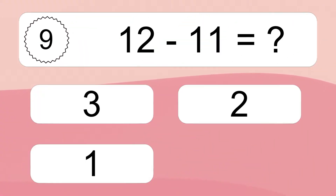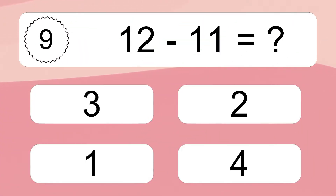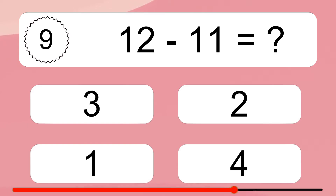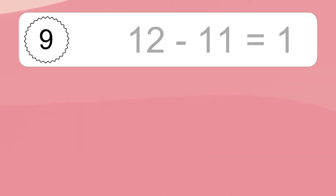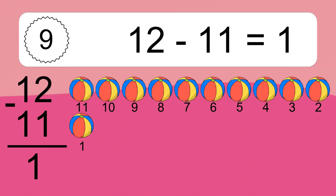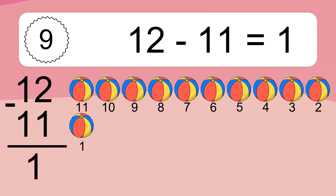12 minus 11 equals what? 12 minus 11 equals 1. Let's count it. 11, 10, 9, 8, 7, 6, 5, 4, 3, 2, 1.